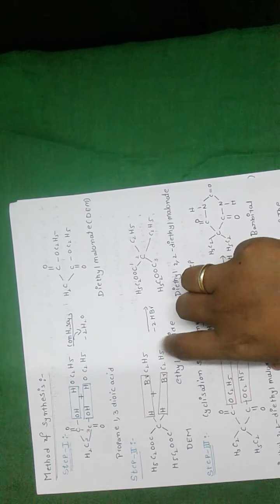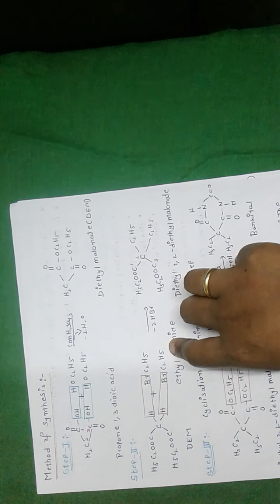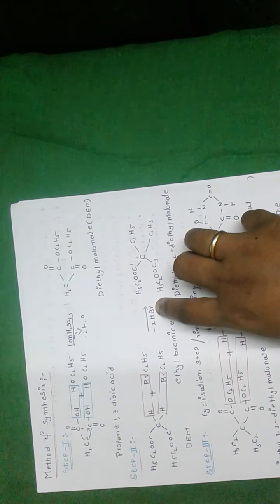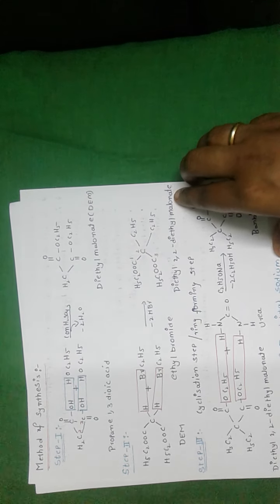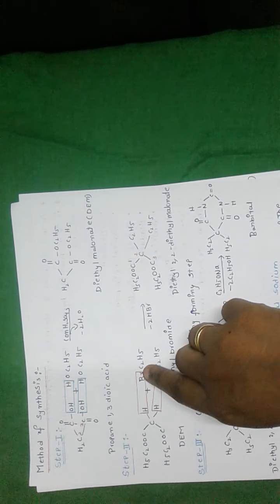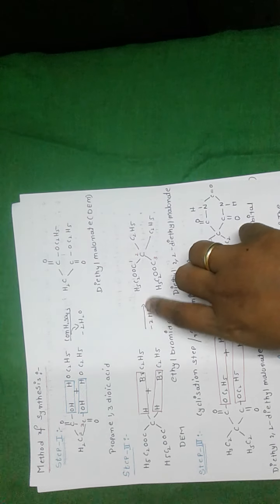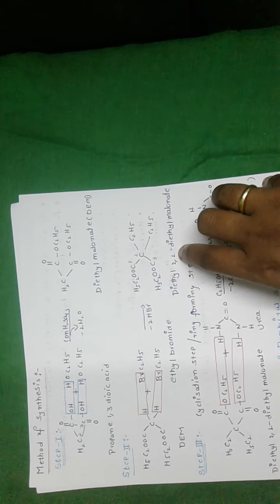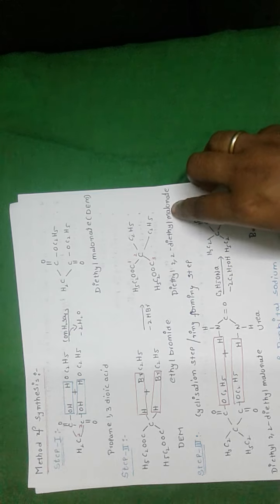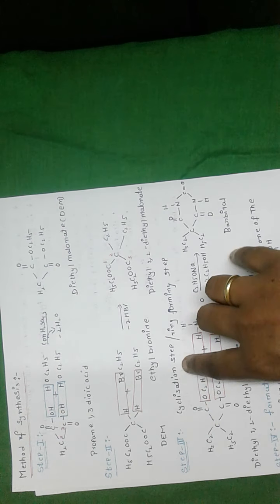Coming to step number two: DEM is reacted with two molecules of ethyl bromide. With the loss of two molecules of hydrogen bromide, it forms diethyl 2,2-diethylmalonate. The hydrogen and bromide are eliminated in the form of HBr, so two HBr molecules are eliminated, and the final product is diethyl 2,2-diethylmalonate.